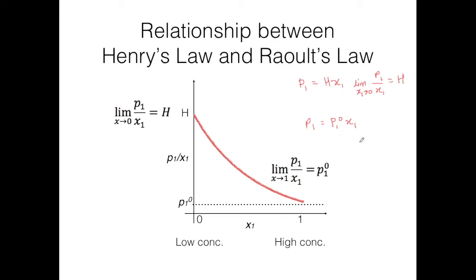For Raoult's law, we rearrange it and apply a limit at high concentration, where x1 becomes 1. We see that it approaches the partial pressure of component 1 if it is pure. So as the concentration goes towards the high concentration range, the partial pressure approaches the partial pressure of pure component 1.